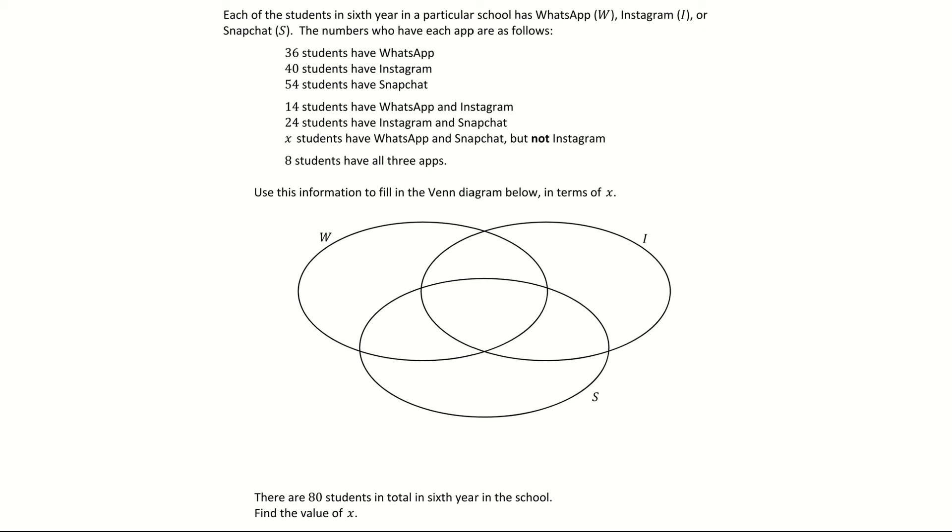In this video we are going to look at Venn diagrams which deal with problems that involve three sets. We are going to look at two parts to the question. The first part is going to ask us to fill in the Venn diagram and then the second part is going to ask us to solve for a missing letter which outlines a missing section within the Venn diagram. As we look at the question, each of the students in sixth year in a particular school has WhatsApp, Instagram or Snapchat. Use this information to fill in the Venn diagram below in terms of x.